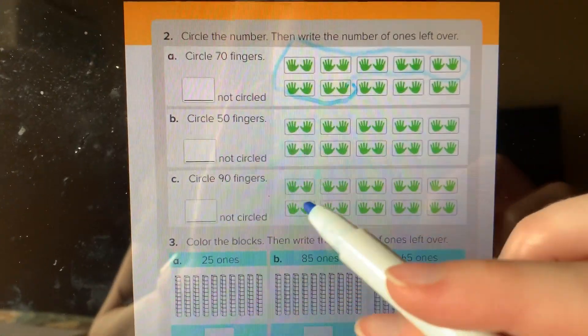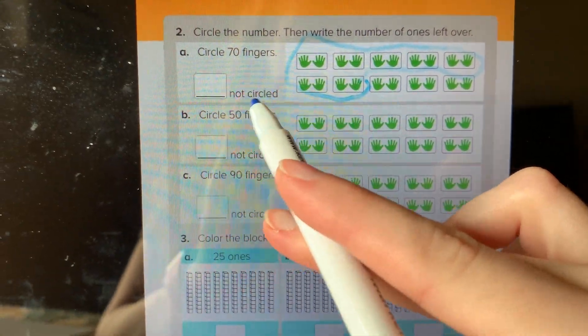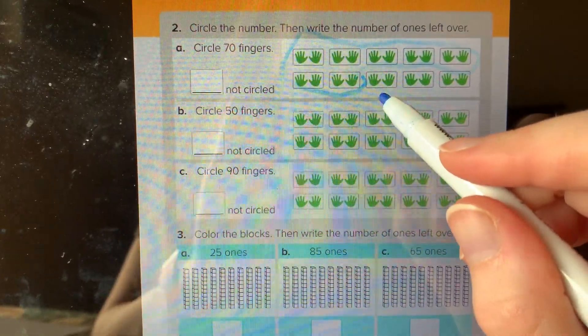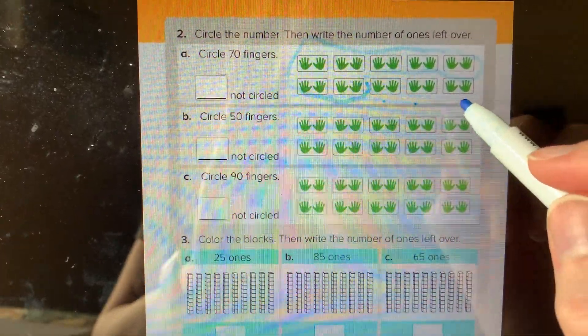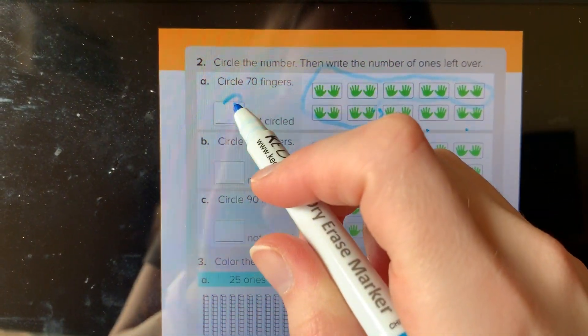Now for our answer we have to read close because it says the answer of not circled fingers. So our not circled fingers would be counting by 10s again: 10, 20, 30. So then here we're just gonna write 30.